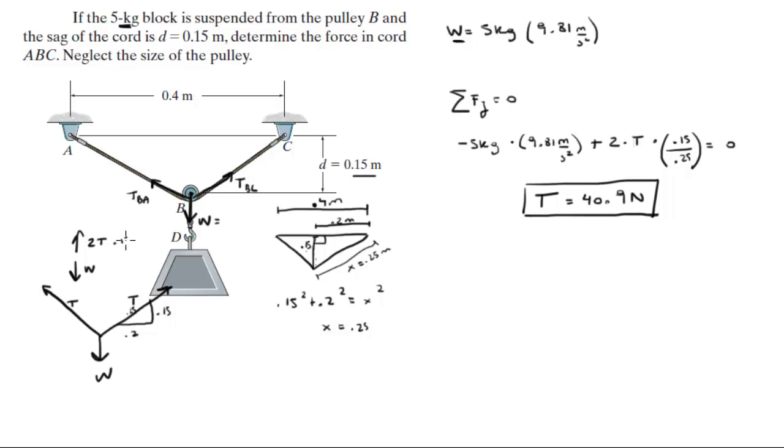2T going up times 0.15 over 0.25, that's how I figured out this formula, and then I just solved for the tension. So 40.9, final answer.